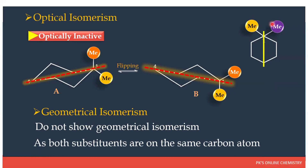We do not show geometrical isomers because both substituents are present on the same carbon atom. Both methyl groups are present on the same carbon atom, and therefore no geometrical isomers are possible with 1,1-disubstituted cyclohexane.